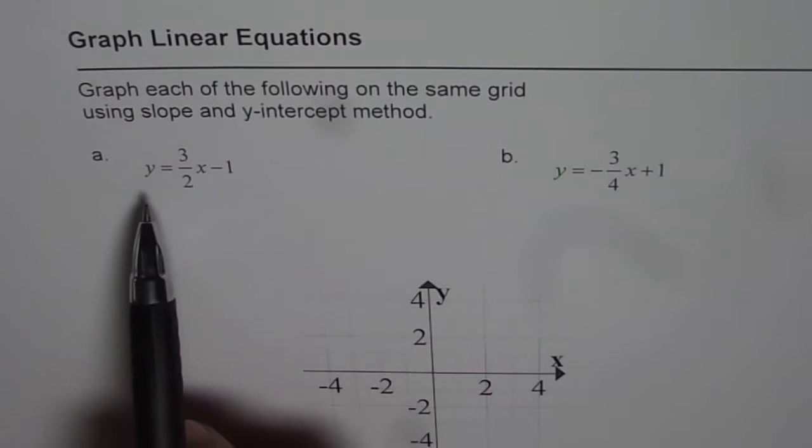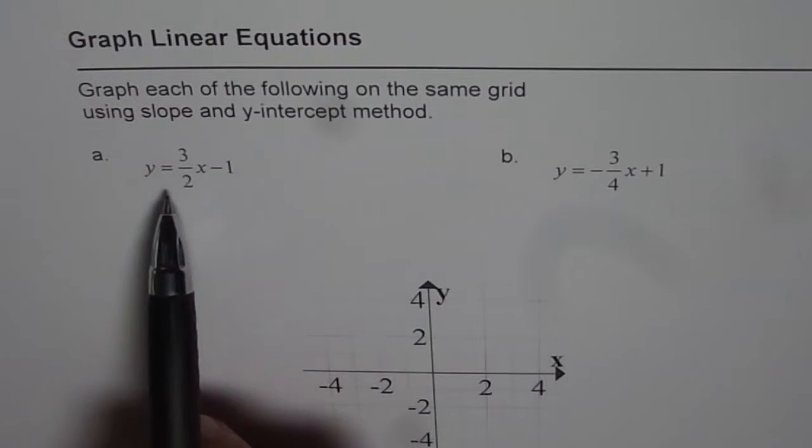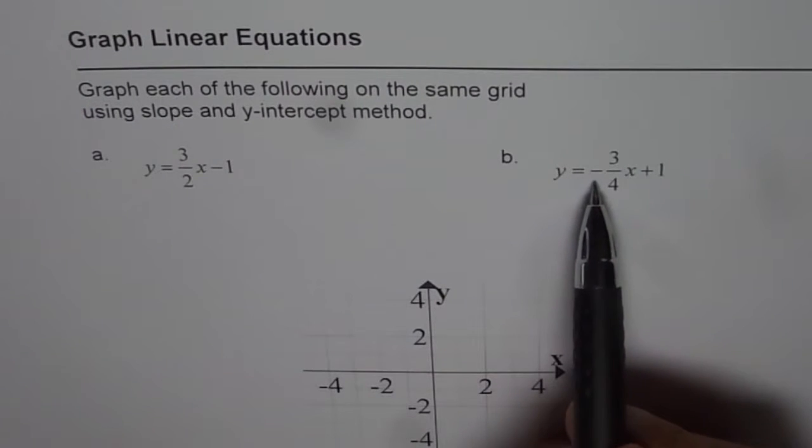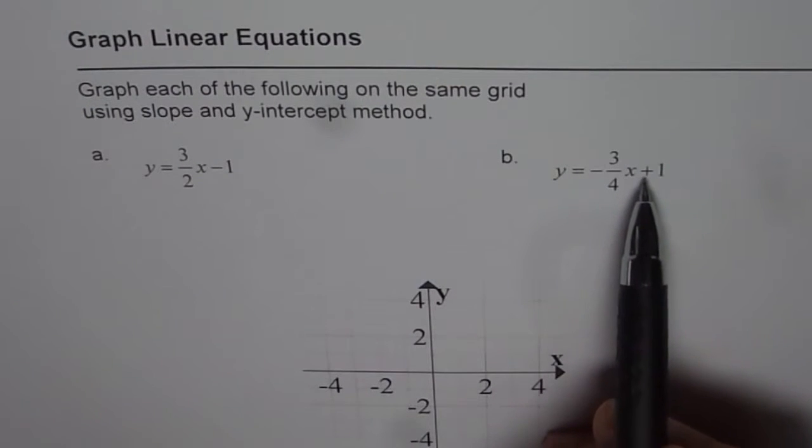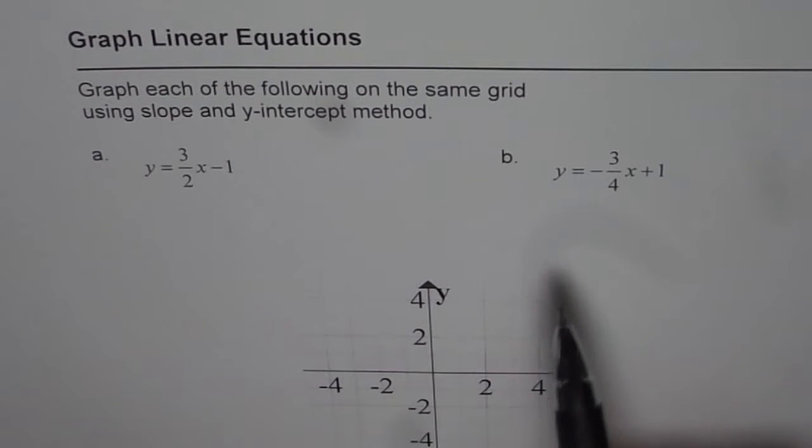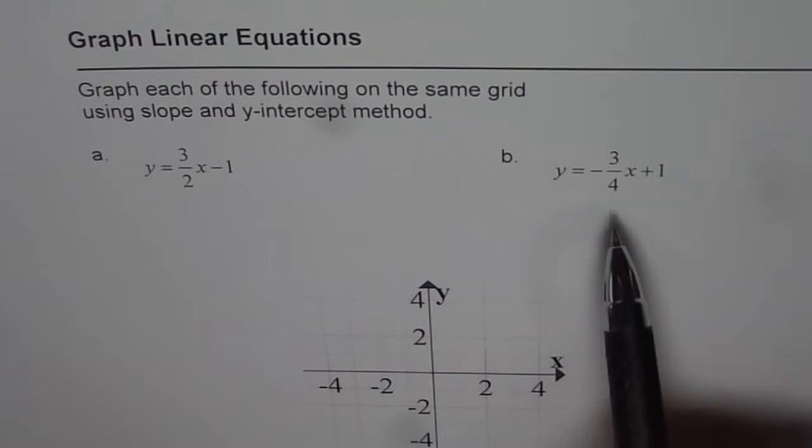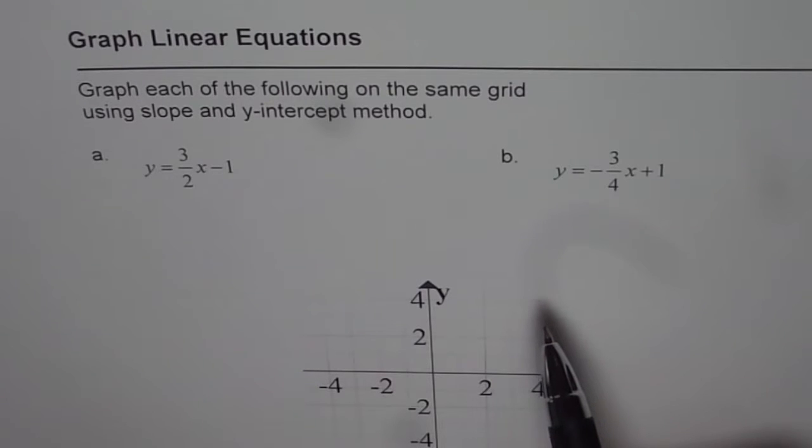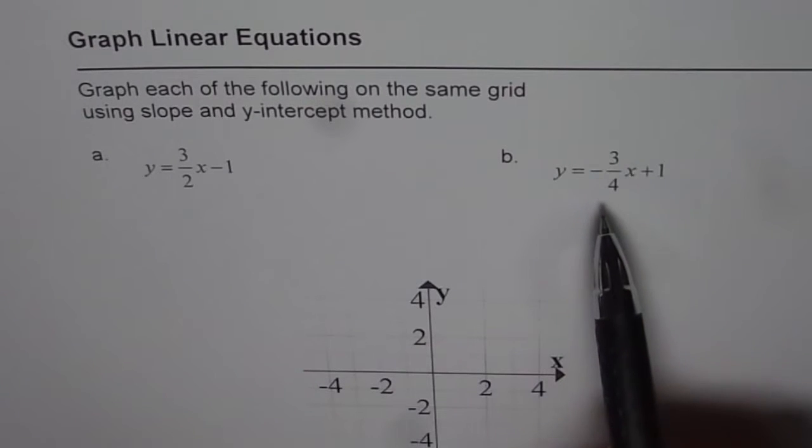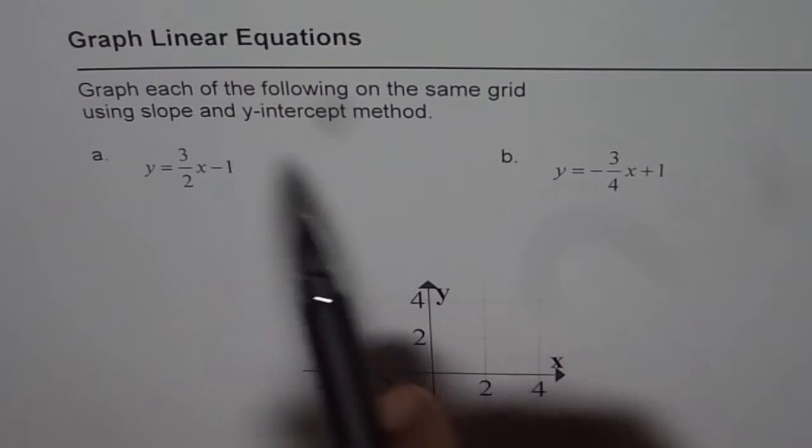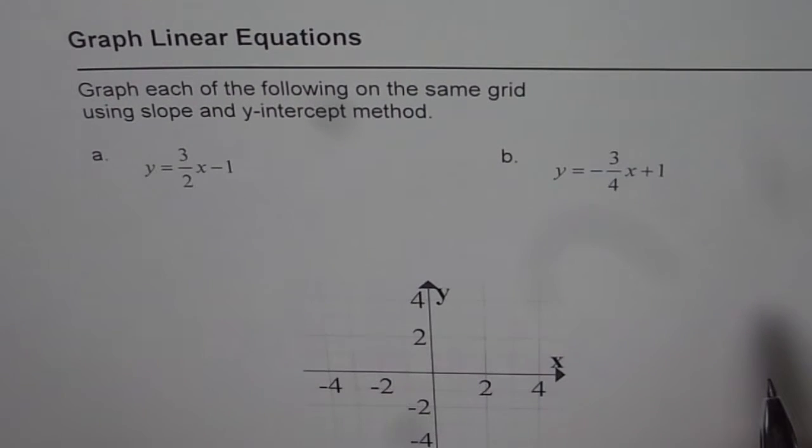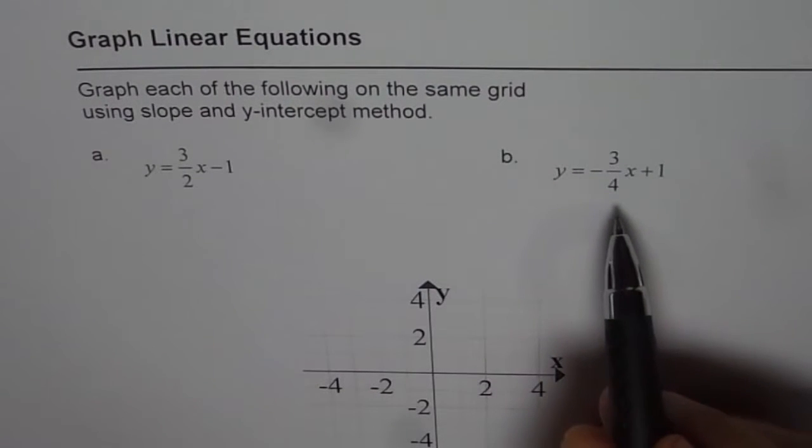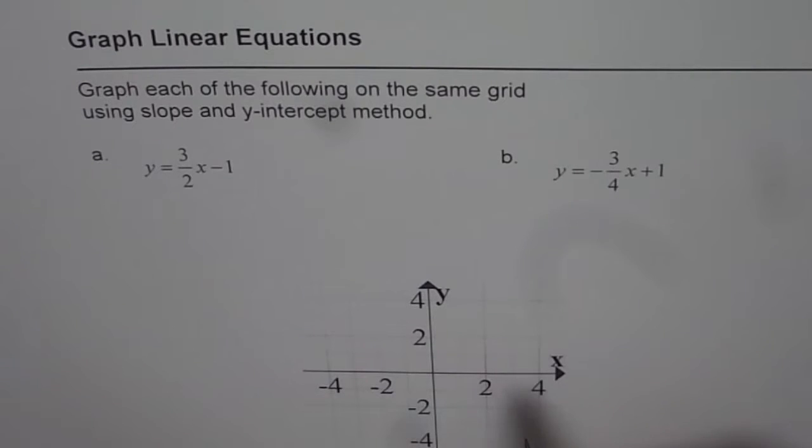We have equations which are y equals 3 over 2x minus 1 and y equals minus 3 over 4x plus 1. As you can see, slope of the line is a fraction. So whenever the slope of the line is given as a fraction, slope and intercept form is the preferred method to use. Table of values can make it complicated at times.